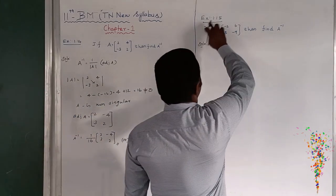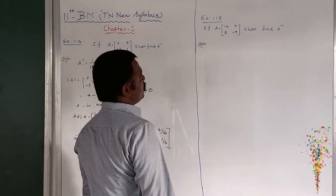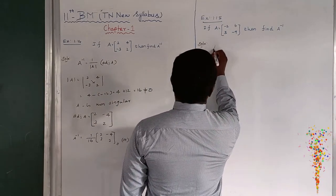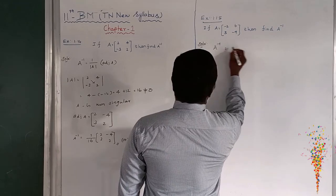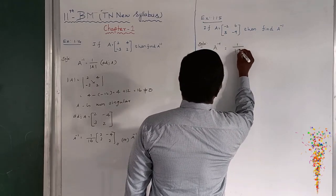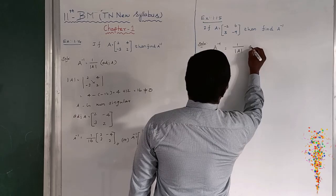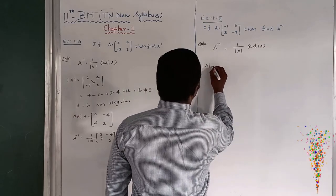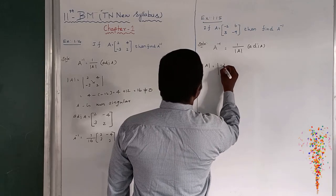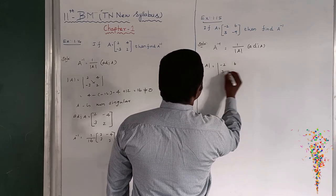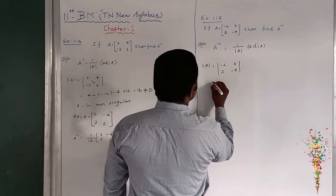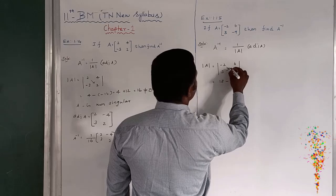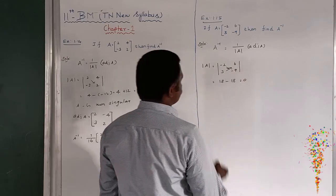The next one, Example 1.15. A equal to minus 2, 6, 3, minus 9. Then find A inverse. Solution: We already know that A inverse equal to 1 by modulus of A into adjoint A. So modulus of A means minus 2, 6, 3, minus 9. You can product these two terms: 18 minus 18, it is equal to 0.